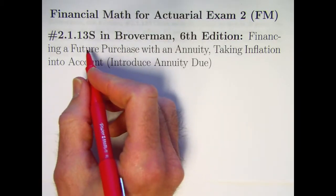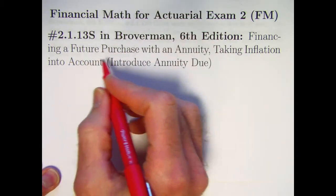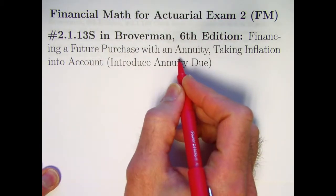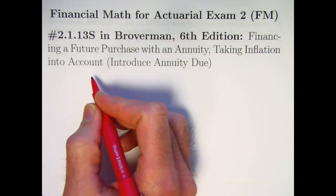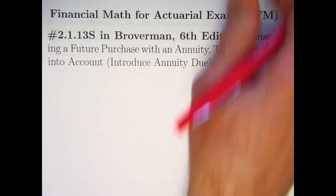In solving problem 2.1.13S, we're going to be trying to figure out how to finance a future purchase with an annuity, taking inflation into account.